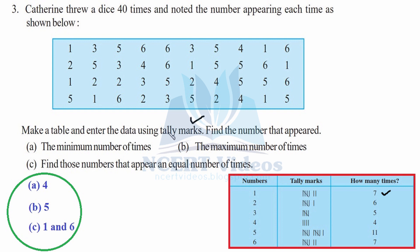Part A: the minimum number of times — which number came least? You can see clearly from the tally marks that 4 is the minimum count, and that number is 4 itself. So 4 appeared only 4 times, which is the minimum. Answer: A = 4. Part B: the maximum number of times — you can see from the tally marks that 11 is the largest count, corresponding to number 5. So 5 appeared 11 times. Answer: B = 5.